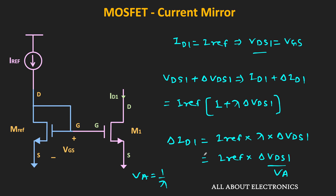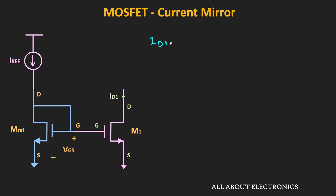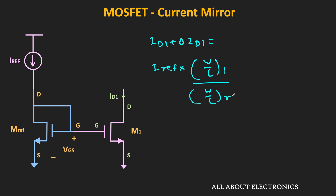While writing this expression, we assumed that the W/L ratios of the two MOSFETs are identical. But if the W/L ratios are different, then in the general expression, ID1 plus ΔID1 equals I_reference times (W/L)_1 divided by (W/L)_reference, times (1 plus λ times ΔVDS1). So with the change in voltage VDS, there will also be a change in the drain current. This change can be minimized by increasing the length of these MOSFETs — that means in the W/L ratio, if we increase the value of L, we can minimize the effect of channel length modulation.